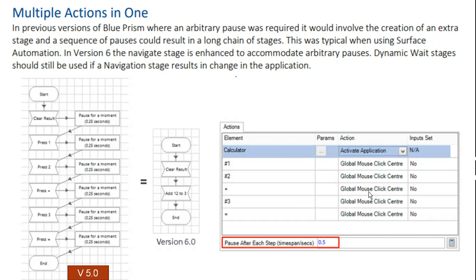The third and important feature is multiple actions in one. In the previous version you would implement one action per navigate stage — for example, only 'activate application' for a calculator. But in version 6.0, you can see calculator activate, global mouse click center, and many other actions all combined in multiple actions within one navigate stage. Here you can see the 'pause after each step' option.